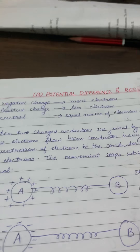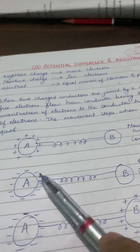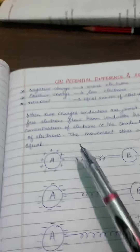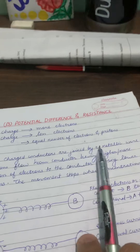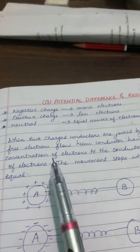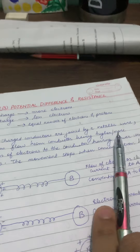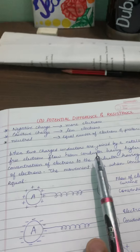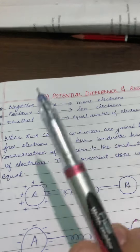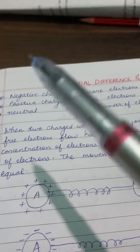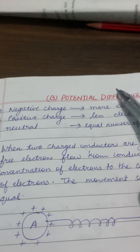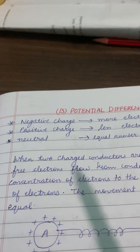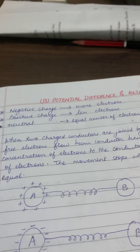Now suppose two charged conductors — one can be positive and one negative, or one positive and one neutral, or one negative and one neutral. When the two charged conductors are joined by a metallic wire, free electrons flow from the conductor having higher concentration of electrons to the conductor having lower concentration of electrons. More electrons means more negative charge, so electrons will start flowing from that end to the end having fewer electrons.